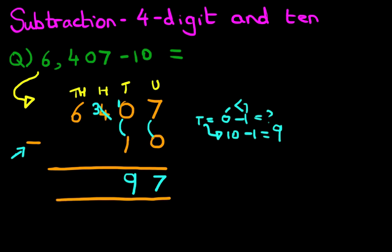We've now got the hundreds column. Remember, the 4 has gone. It has become a 3. So 3 minus nothing. 3 minus 0 is 3. The thousands column. We've got 6 minus, again, nothing over there. 6 minus 0 is 6. And we have our answer.